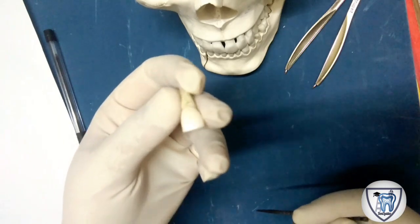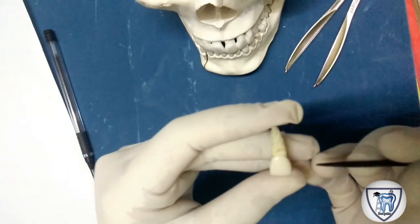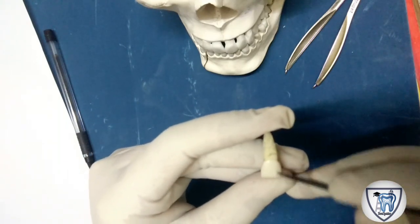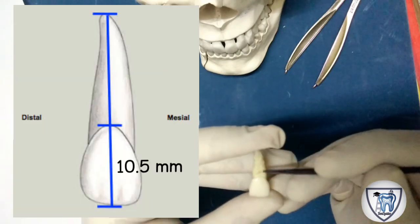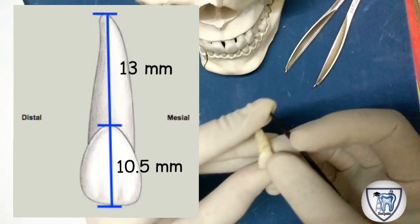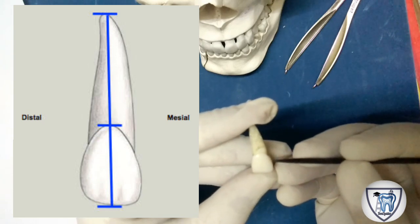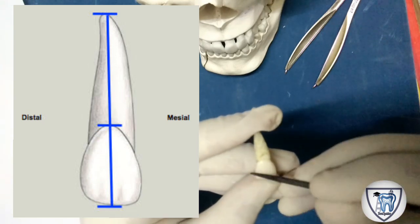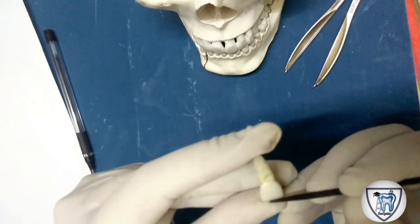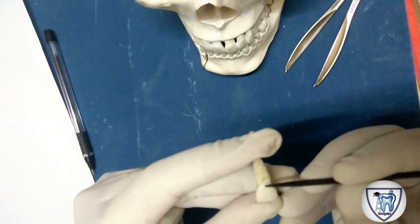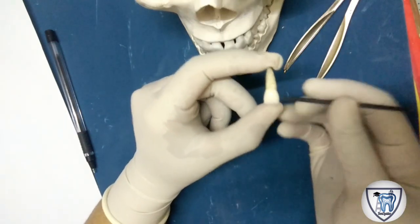Talking about the dimensions of the tooth — the dimensions given in the book are based on average values, and a natural tooth may differ. According to the book, the crown length is 10.5 mm, root length is 13 mm. The mesiodistal diameter at the incisal edge is 8.5 mm and towards the cervix is 7 mm. You must remember these dimensions.